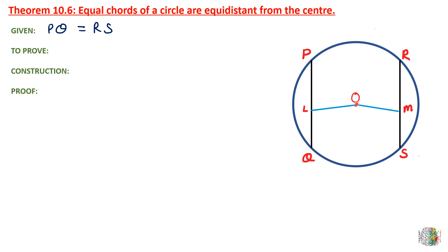And what do we have to prove? What is the equal distance between the center and the chord? That means OL is equal to OM. And when we measure distance, we measure the perpendicular. So these two angles are 90 degrees. What we have to prove: OL is equal to OM.